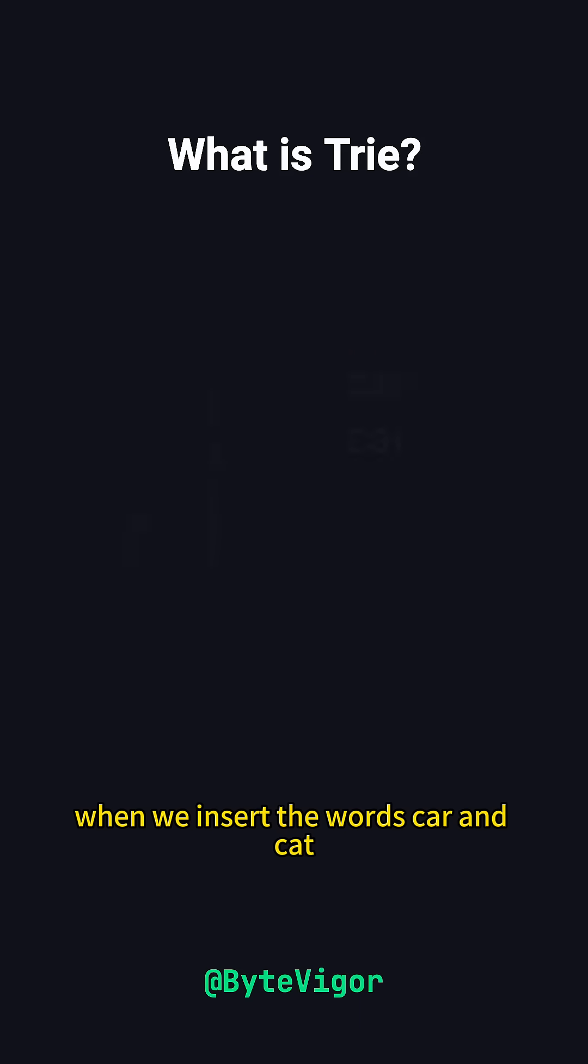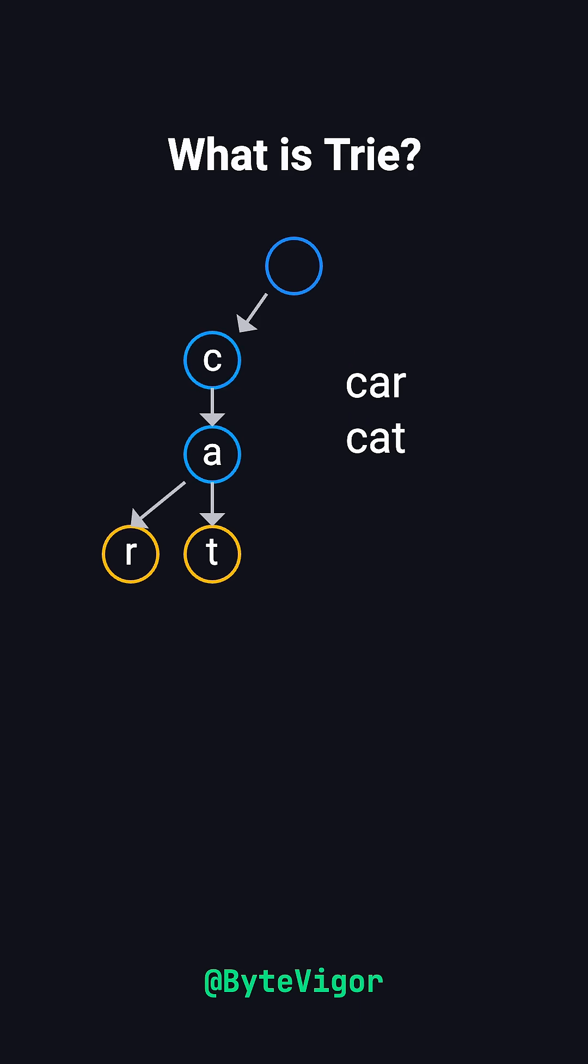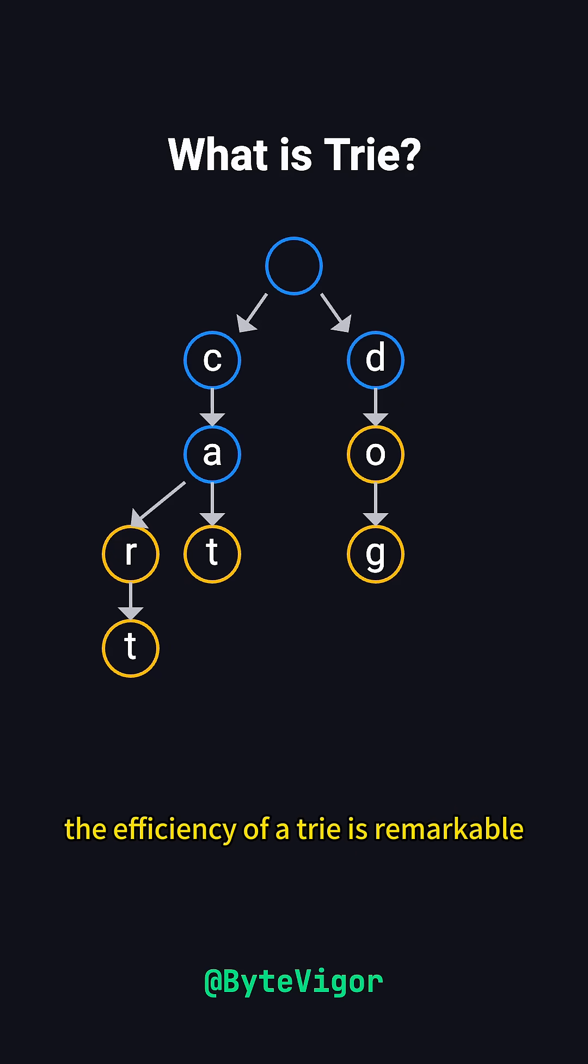For example, when we insert the words car and cat, they share the same prefix path ca, which not only saves space but also speeds up search operations. The efficiency of a trie is remarkable. You start at the root node and follow a path character by character to find what you need. This makes it perfect for handling large-scale string data sets.